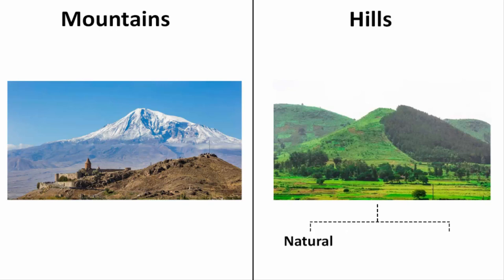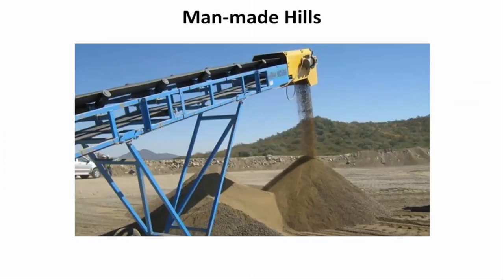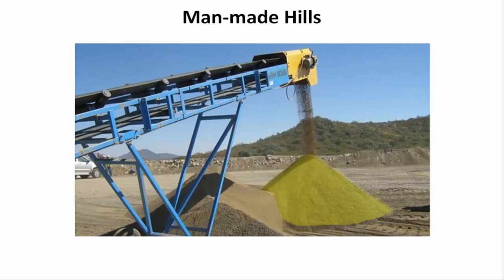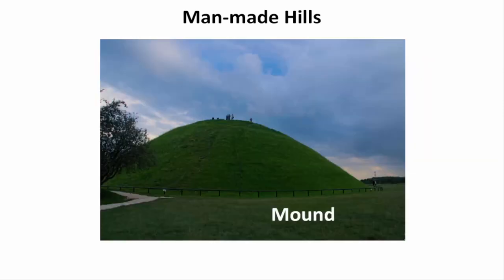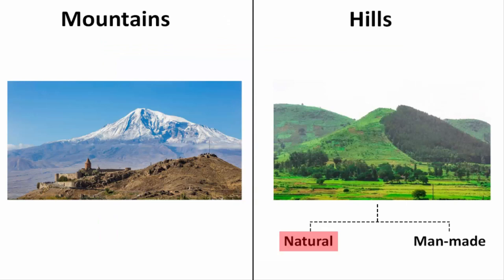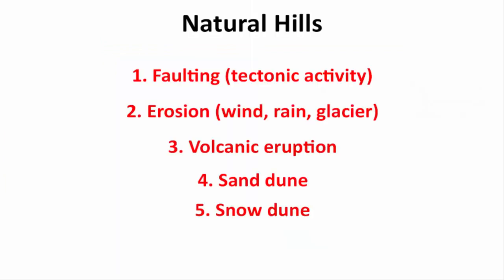Hills can be both natural as well as man-made. Suppose if you dump sand, mud, or earth material at one place, eventually it will turn into a huge stack, which is also a hill. It is called a mound. But in this video, we are talking about natural hills, which are formed by different types of geologic activity.